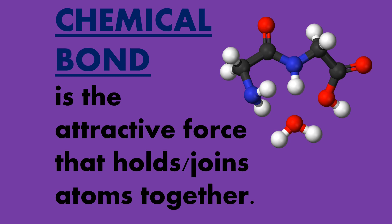But what determines if an atom will bond with another atom? The number of electrons in the outermost shell of a particular atom determines its reactivity, or tendency to form chemical bonds with other atoms. This outermost shell is known as the valence shell, and the electrons found in it are called valence electrons.